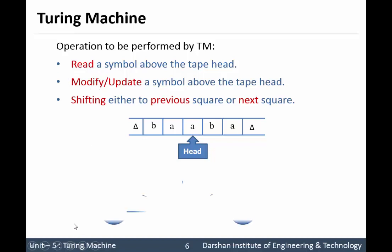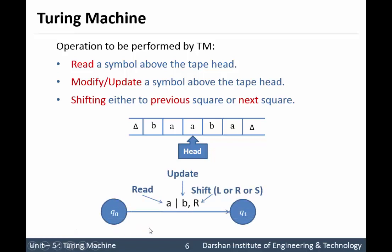Here we have a transition diagram of a Turing machine. Circles represent the states, and there are some symbols above the transitions. The symbols are in the format A slash B comma R. The leftmost symbol is for the read operation, the second symbol is for the update operation, and the third symbol is for the shift operation.